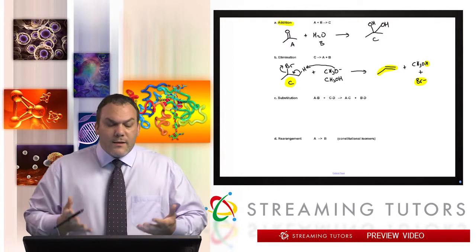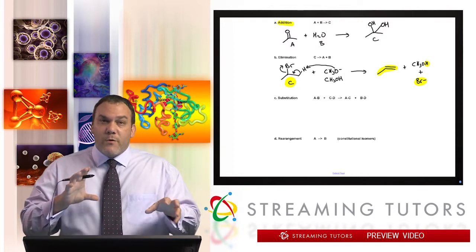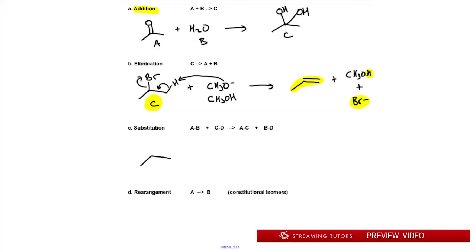The next one is known as a substitution, where we're swapping pieces. For example, if we have a structure that has a Br right there and I have H2O, let's say it looks like this. If this oxygen goes into the carbon with Br and the Br leaves and takes the H from that oxygen, we're taking the H off of water.